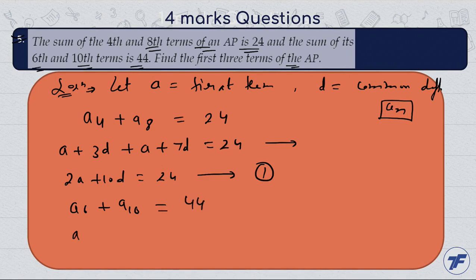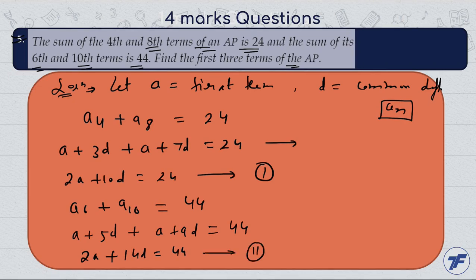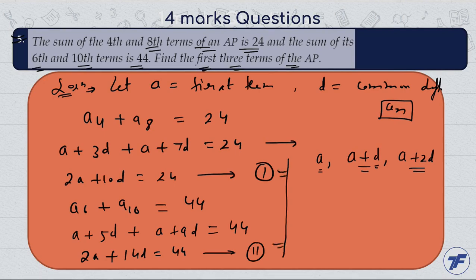Similarly, a6 plus a10 is equal to 44. So a plus 5d plus a plus 9d is equal to 44, which gives 2a plus 14d is equal to 44. Consider this as equation number two. We need to find the first three terms of the AP, i.e., values of a, a plus d, and a plus 2d. With these two linear equations in two variables a and d, we can find both values.